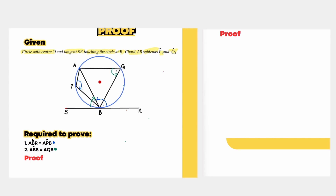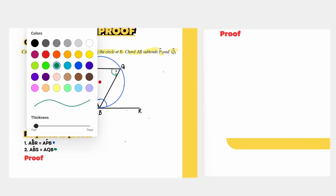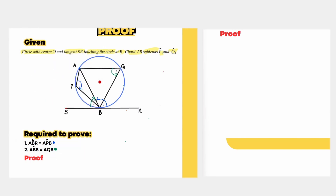For the construction, we're going to create a diameter that goes from B, connects to the centre, goes up and creates point T. Then we connect that point T to point A. That's our construction.